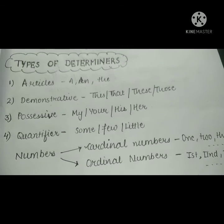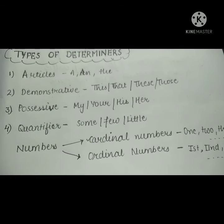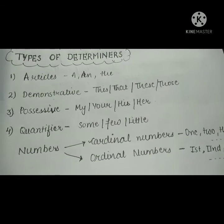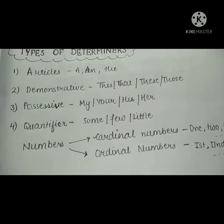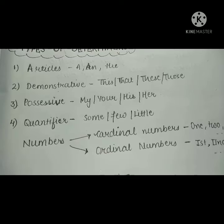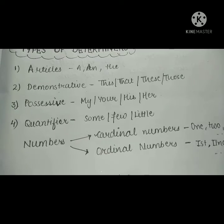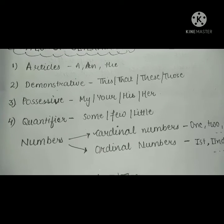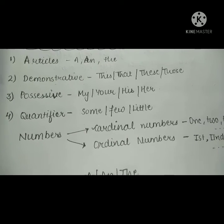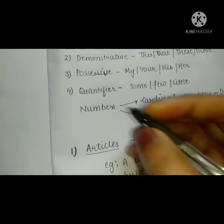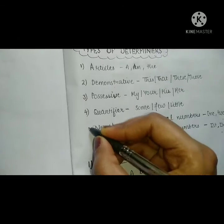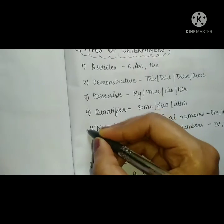Let's revise once more. First, our articles. Second, demonstrative. Third, possessive. And fourth, quantifier — which includes our numbers. Clear?